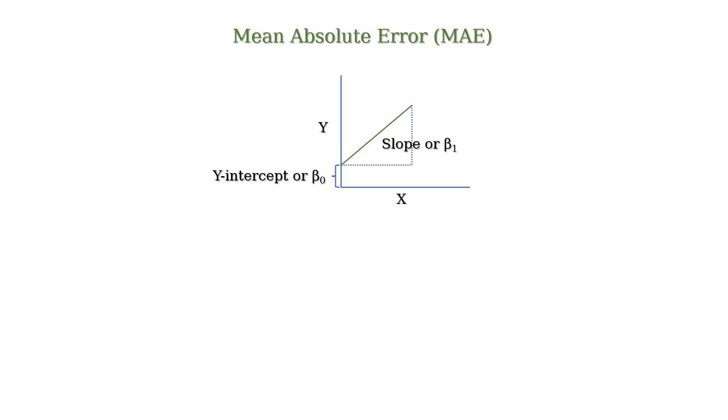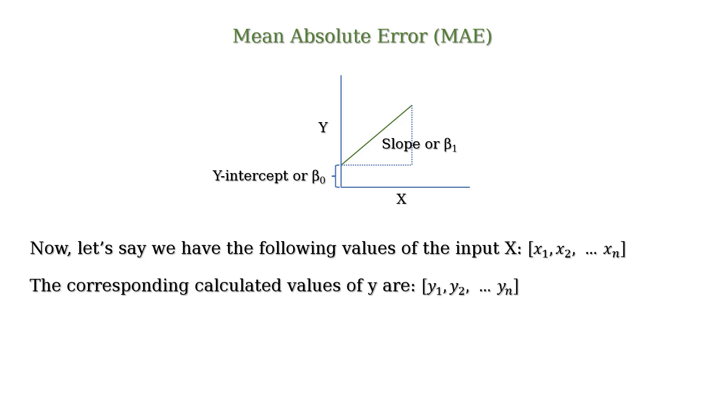Let's say the predictor variable x takes the following values x1, x2 to xn. The linear regression model calculates the following values of y for the corresponding values of x: y1, y2 to yn. And the actual values of y for the corresponding values of x are ya1, ya2 to yan.